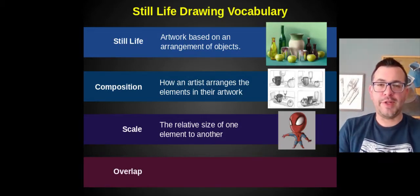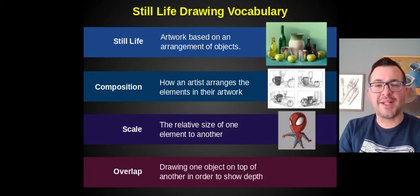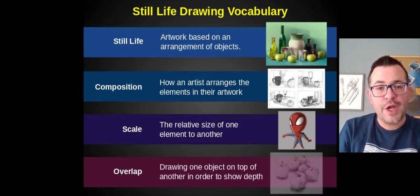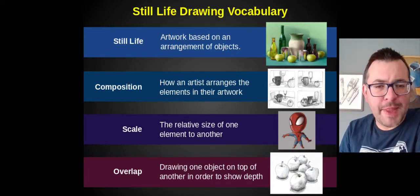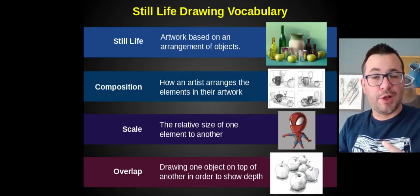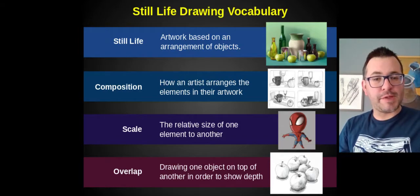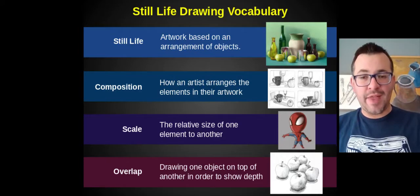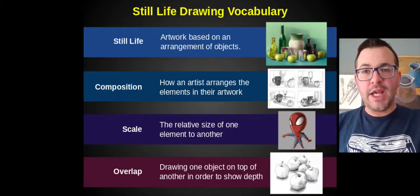The fourth vocabulary term for the project is overlap, which is drawing one object on top of another in order to show depth. These apples here on the screen use overlap, and that shows that the apple in the bottom center is in front, closest to us the viewer, because it overlaps the other ones. As those apples recede in space, they are shown behind that front apple. Using overlap is a great way to show depth in space in an artwork.